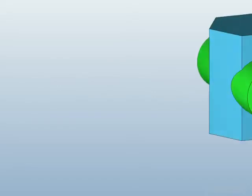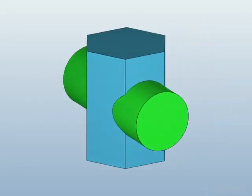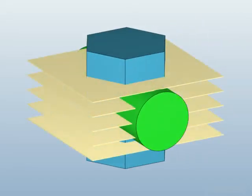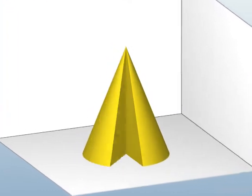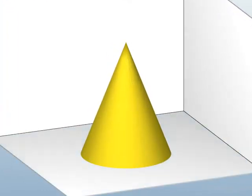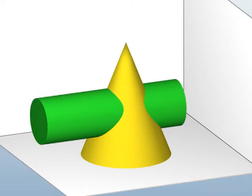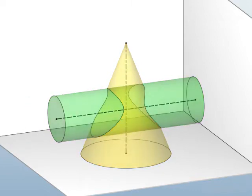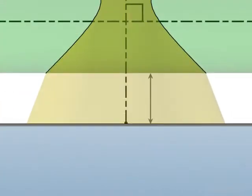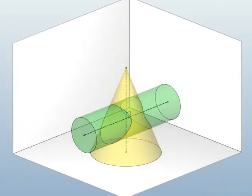Welcome back. Let's crack some more problems on intersection of solids using the cutting plane method. We have a right circular cone resting on HP. A cylinder penetrates the cone with its horizontal axis intersecting the axis of the cone at right angles and at a distance 30 millimeters above the base of the cone.